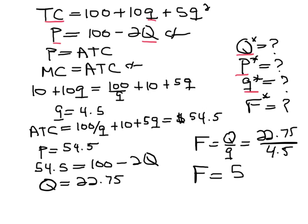So indeed, since firms are having a lot of losses when there are 50 firms, we're clearly going to have a lot fewer firms when the market is in long-run equilibrium. The number of firms is going to be equal to 5.